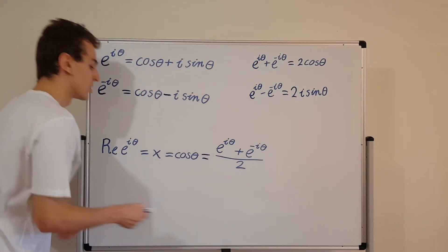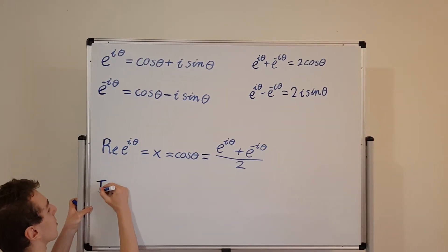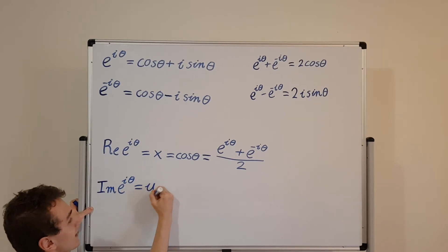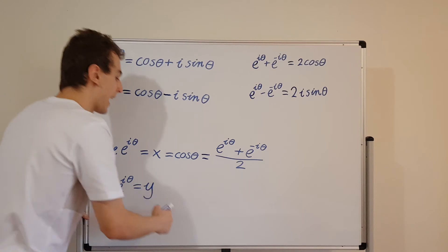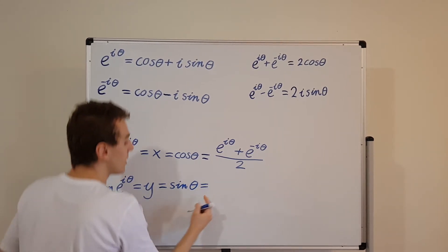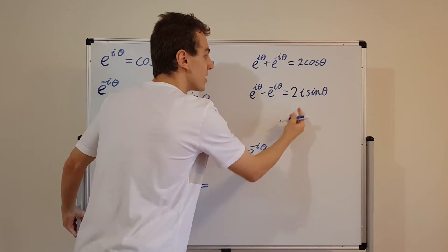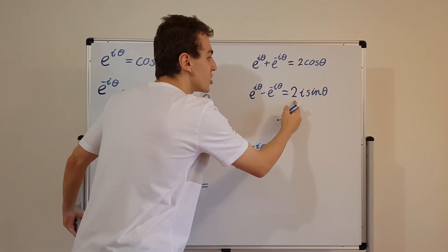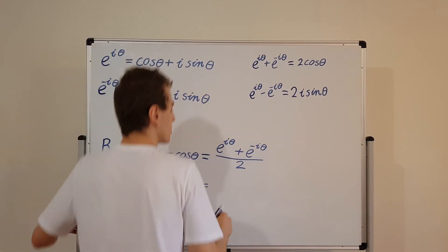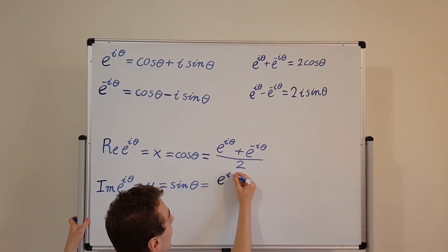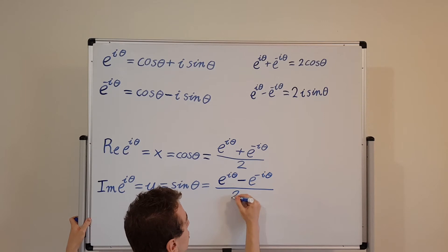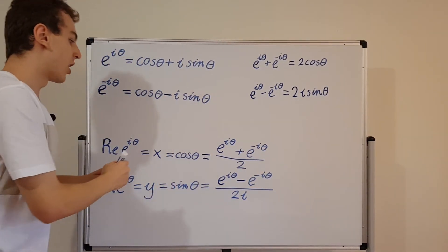Now let's do the same for sine of theta. The imaginary component — written as 'im' — of e to the i theta is sometimes called y, and this is equivalent to sine of theta. For sine of theta, we divide by 2i, because there's an extra factor of i from the imaginary components. So sine of theta equals e to the i theta minus e to the minus i theta, all divided by 2i. These two relationships are very, very useful and we're going to keep using them again and again.